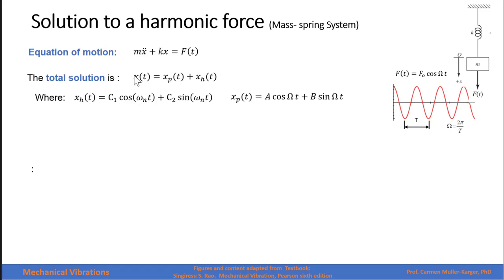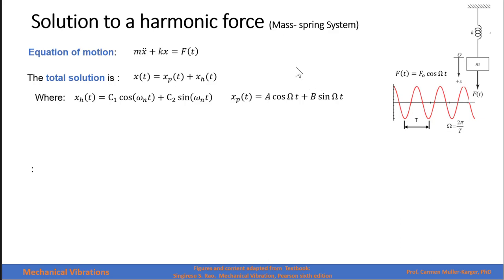The total solution for the system equals the particular solution plus the homogeneous solution. For a system that does not have any damping, the homogeneous solution is c1 cosine of omega_n t plus c2 sine of omega_n t. The particular solution has the same form as the external force — it is a times the force plus b times the derivative of the force. The derivative of cosine is negative sine, but that negative is absorbed by the constant, since we have to find that constant anyway.